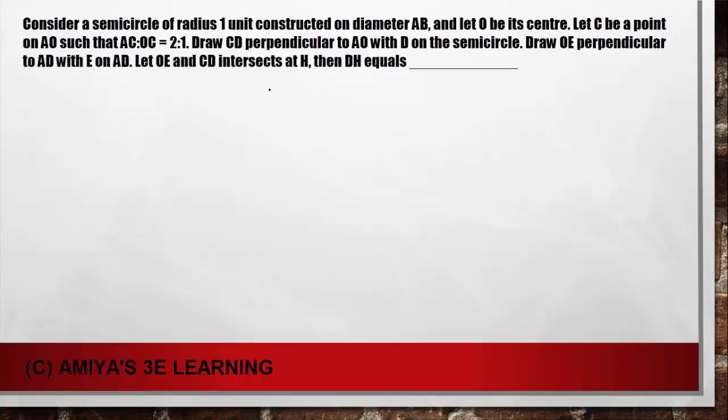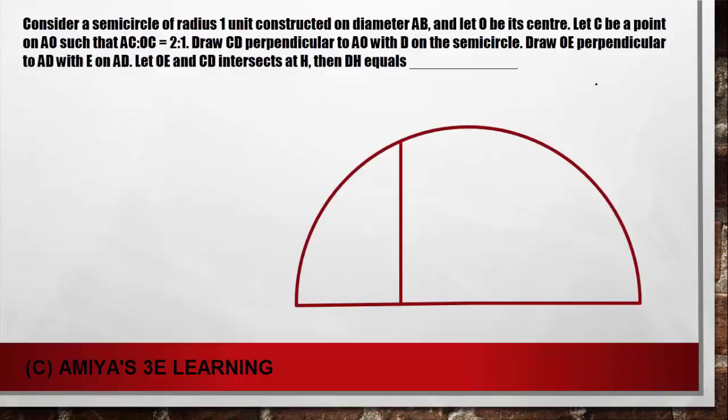This is a simple question of geometry in which we have to draw according to the question. So we have a semicircle, we have a line, another line, then a line, then a line.